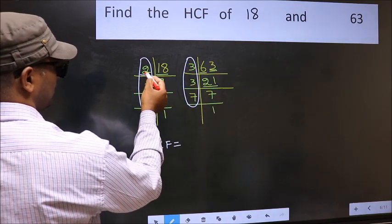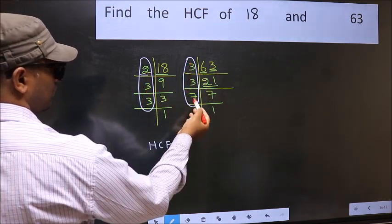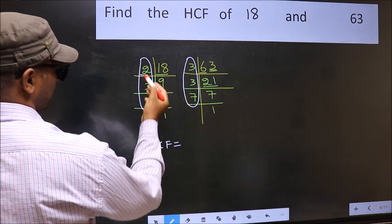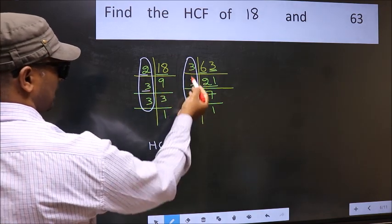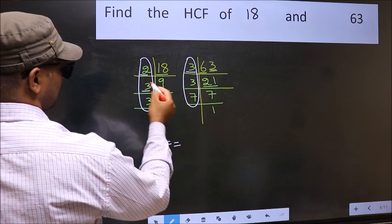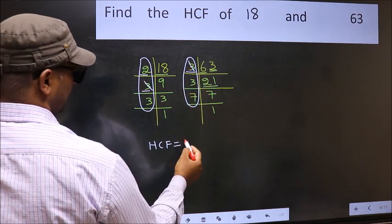Starting with number 2. Do we have 2 here? No. Next number is 3. Do we have 3 here? Yes. So cut 3 right here.